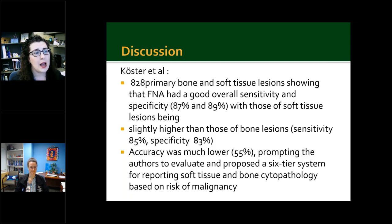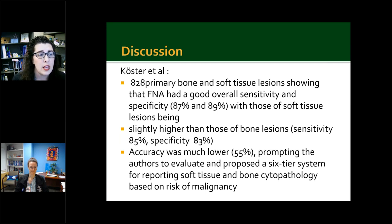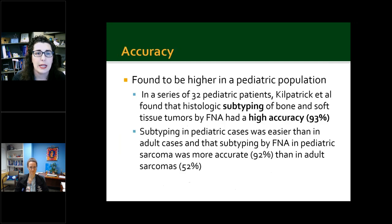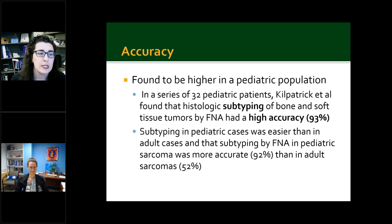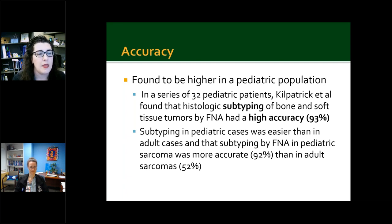Another study by Koster et al. looked at 820 primary bone and soft tissue lesions and also showed an overall good sensitivity and specificity, slightly higher in bone lesions, though the accuracy of that study was much lower. In that paper, they proposed a six-tier system for reporting soft tissue and bone pathology based on malignancy. A study by Kilpatrick found that in a series of 32 patients, histologic subtyping of bone and soft tissue by FNA had higher accuracy in the pediatric than adult population, and subtyping was a little bit easier in kids as well.